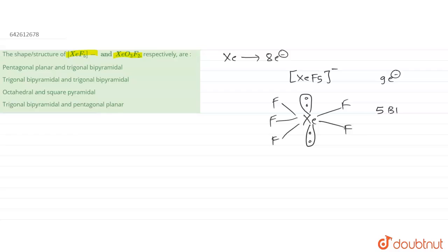Hybridization is going to be sp3d3. This is going to be sp3d3. So geometry of this particular compound is going to be pentagonal planar. This is what pentagonal planar.